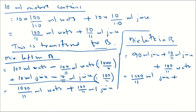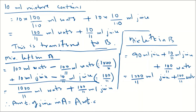What we find here is that the amount of juice in A is the same as the amount of water in B. Both are 100/11 ml. So the amount of juice in A equals the amount of water in B — and that quantity is 100/11 ml.